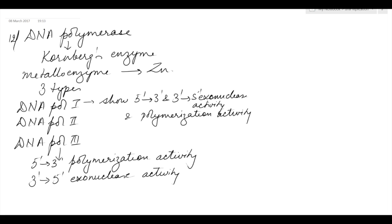The main enzyme required for the formation of the new strand is DNA polymerase, also known as Kornberg's enzyme, as it was discovered by Kornberg. It is a metalloenzyme and the metal present in it is zinc. DNA polymerase is of three types: DNA polymerase 1, 2, and 3.